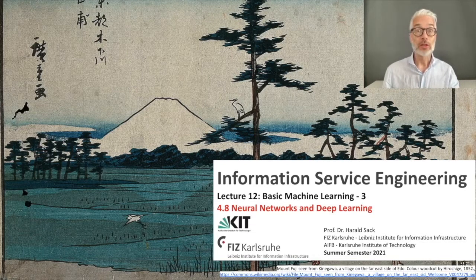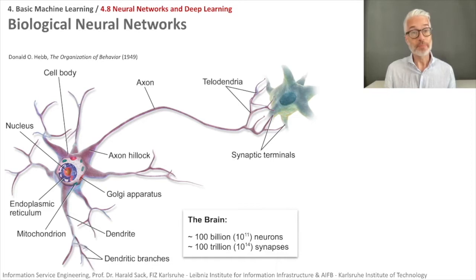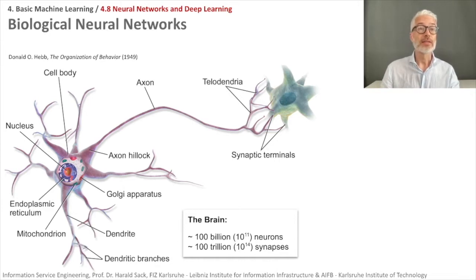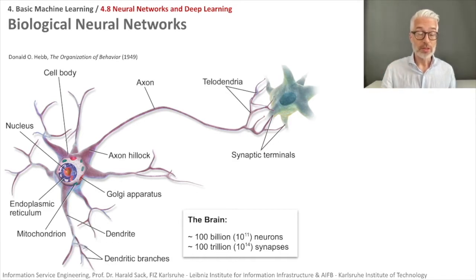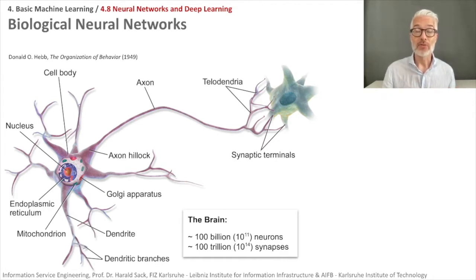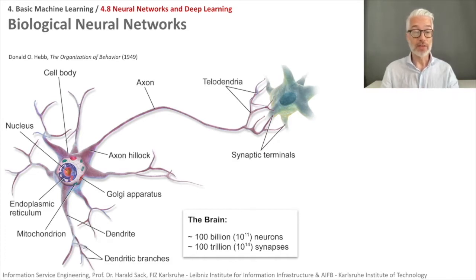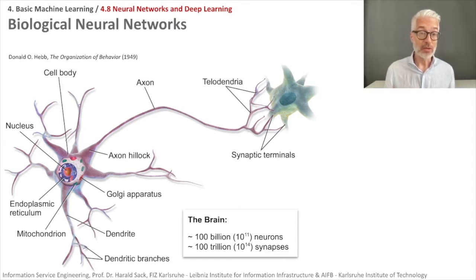We are going to start with so-called biological neural networks. The functioning of neural networks in the brain has been explained as early as the 1940s — here by Donald Hebb, for example. We have so-called neurons, which are the nerve cells, and they are able to learn. Human brains learn by changing the strength of the connections of the neurons amongst each other upon repeated stimulation by the same kind of impulse. In the brain we have more than a hundred billion neurons — 10 to the power of 11.